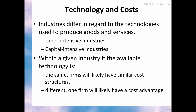Technology and cost are other important factors determining the market structure. Some industries employ labor intensively, while others employ capital intensively. This of course has important implications for production cost. If companies utilize similar technology, they typically exhibit similar cost structures. But if companies within the same industry employ different technology, their cost structure will be different as well, and competitiveness will differ across companies as well.